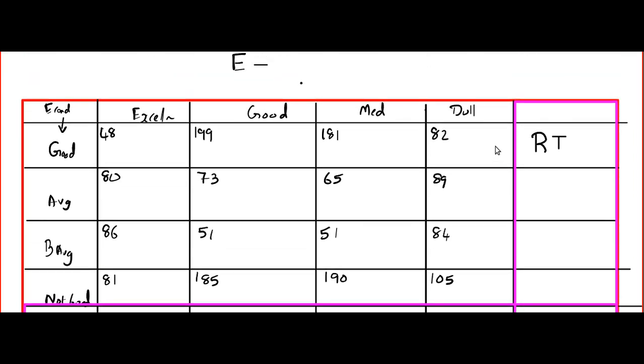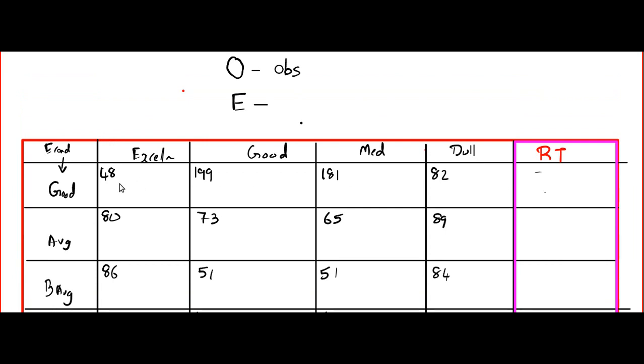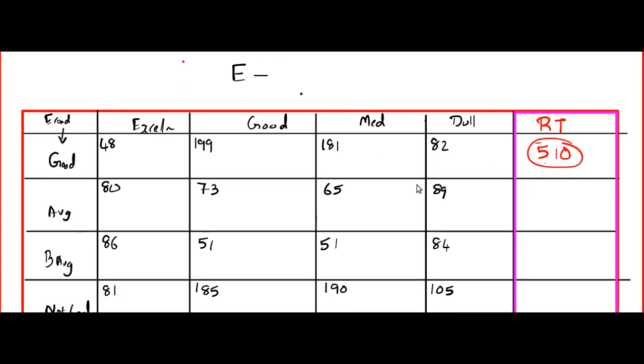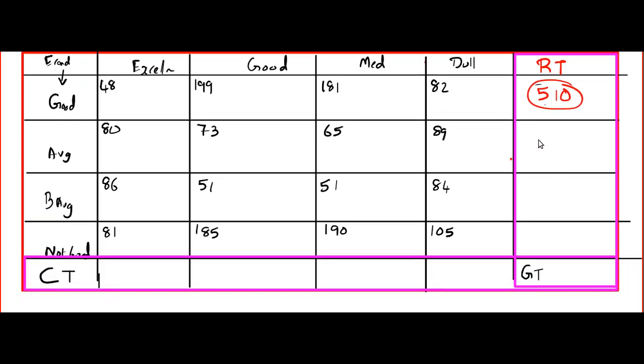Okay. Now, you can write the row total. Okay. Row total is, you add all these first rows. 510, 510. Put it in a circle so that you do not mix it with the data. 307, 272, 561.